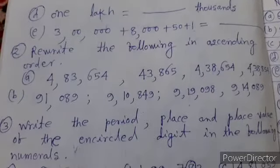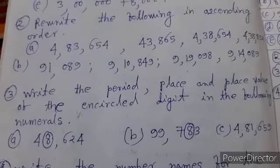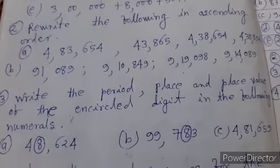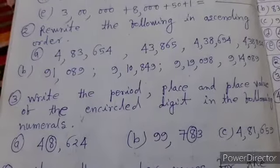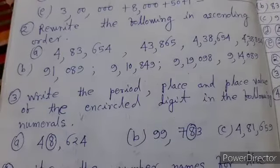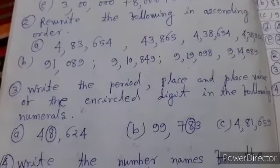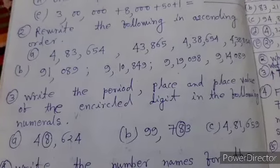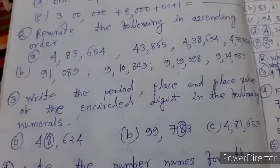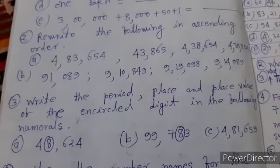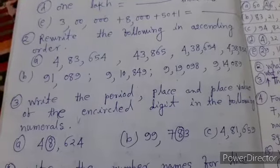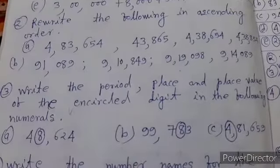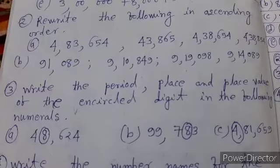Question 3: Write the period, place and place value of the encircled digits in the following numerals. A: 48,624 where 8 is encircled. B: 99,783 where 8 is encircled. C: 481,659 where 4 is encircled.